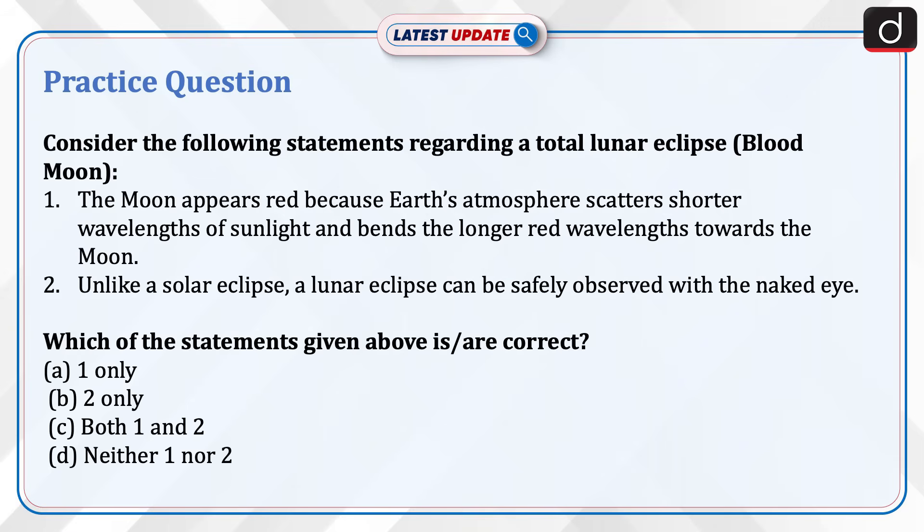Now it's time to do a practice question. Consider the following statements regarding a total lunar eclipse. Statement 1: The Moon appears red because Earth's atmosphere scatters shorter wavelengths of sunlight and bends the longer red wavelengths towards the Moon. Statement 2: Unlike a solar eclipse, a lunar eclipse can safely be observed with the naked eye. Which of the statements given above is or are correct?